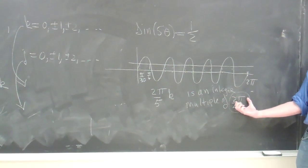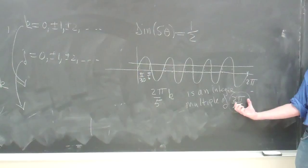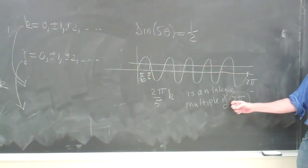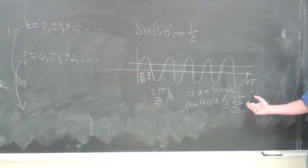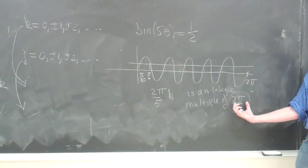You have this irrational number of 2 pi over 5, and you're saying that it's an integer multiple of 2 pi over 5. So you can think about that as a unit.